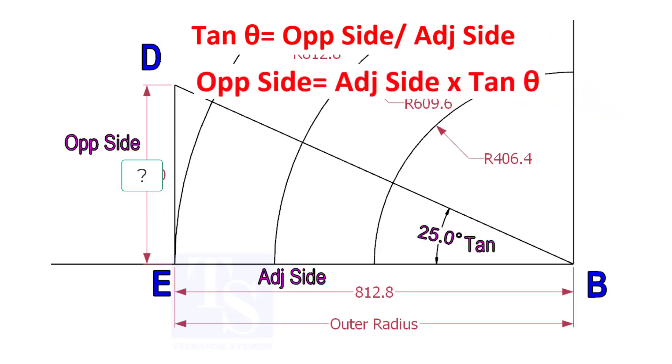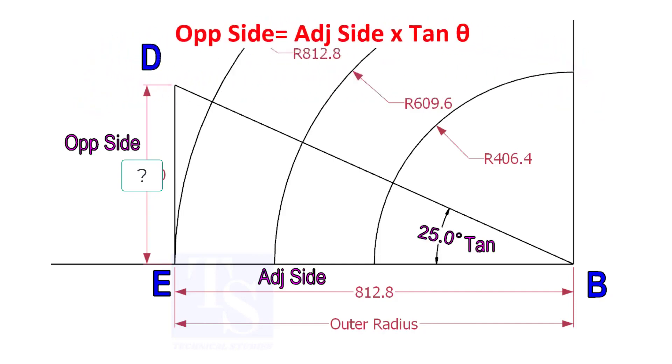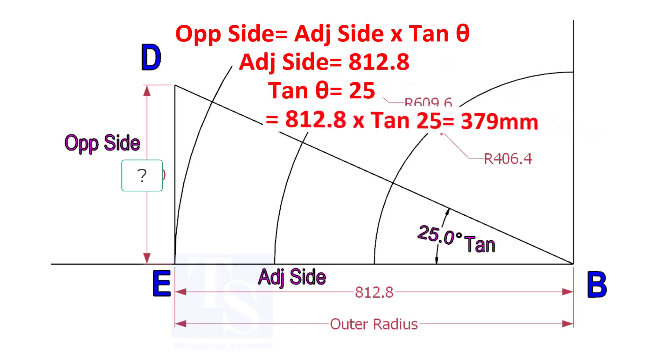Opposite side equals adjacent side multiplied by tan theta. 812.8 into tan 25 equals 379 millimeters.